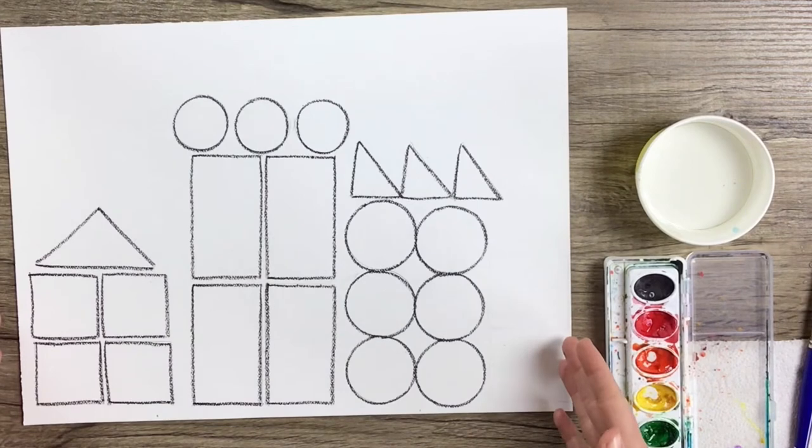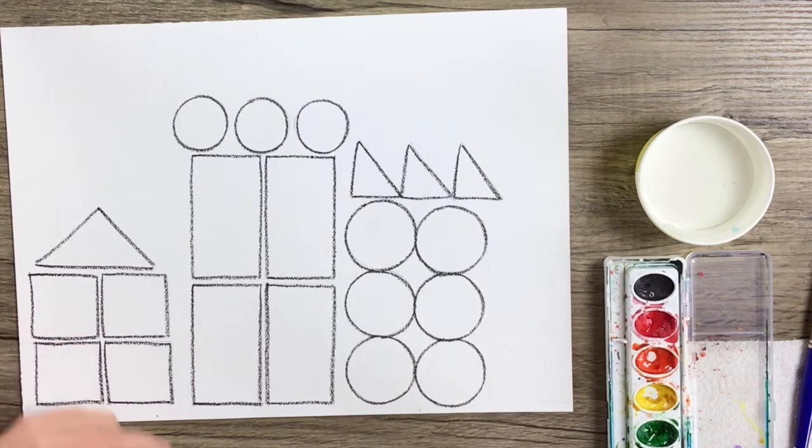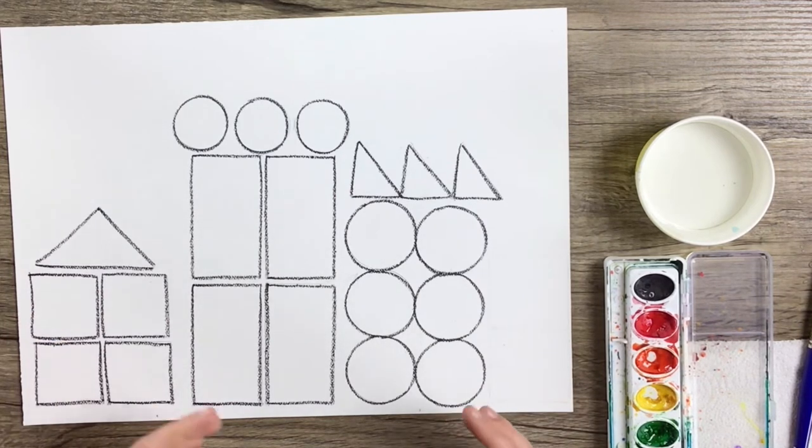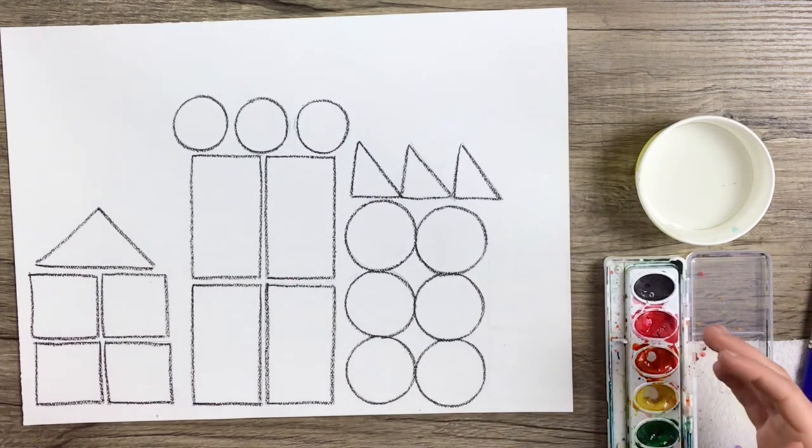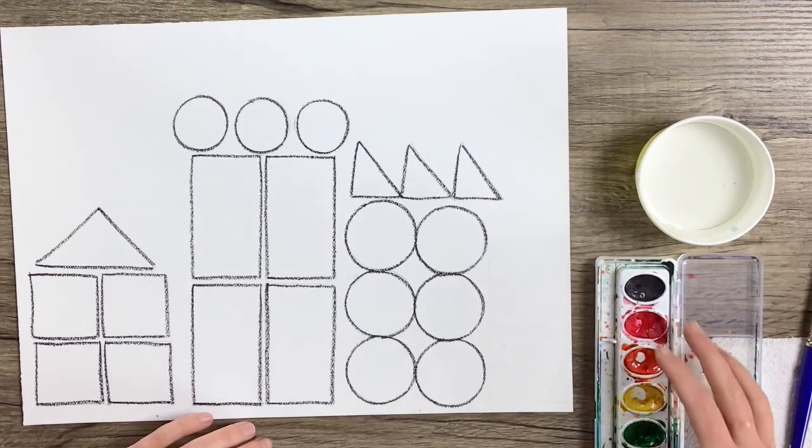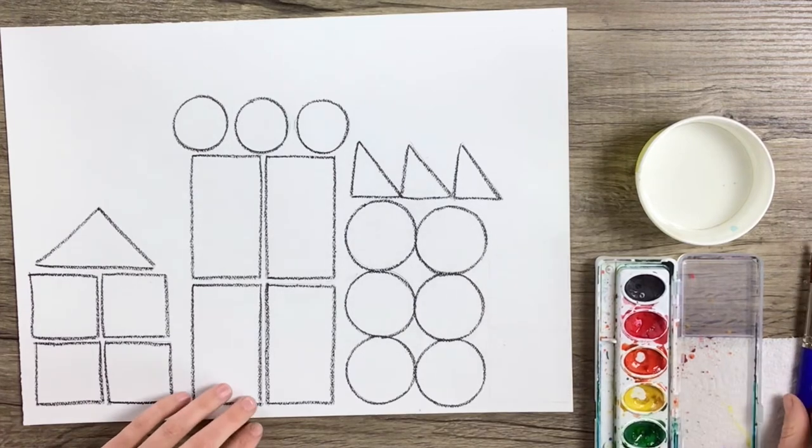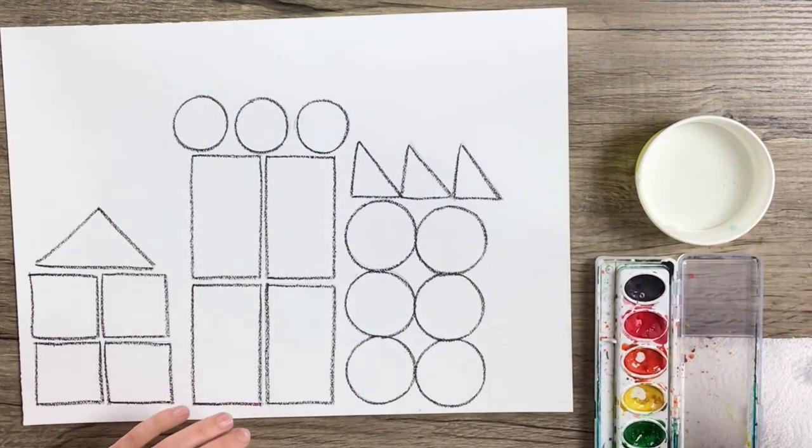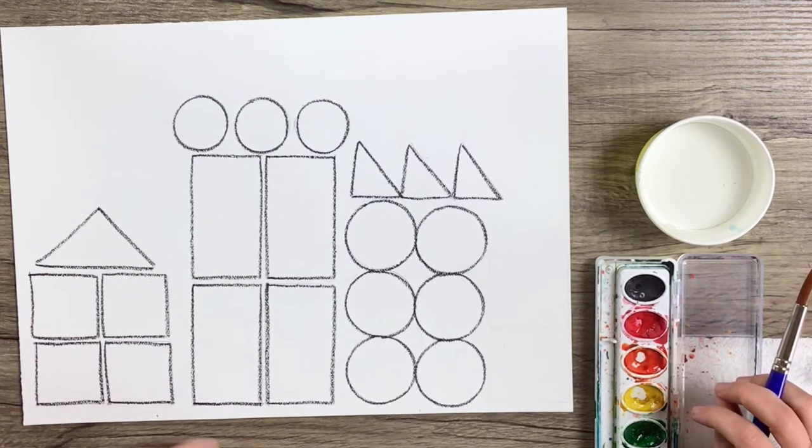Okay, so now that everything's outlined with black crayon, the next step is to fill in each shape with a color. I would suggest just sticking with rainbow colors using watercolor because if you use black or brown and that black and brown hits or touches any of the other colors, your other colors are just not going to look as bright. So I would suggest using red, orange, yellow, green, blue, or purple.